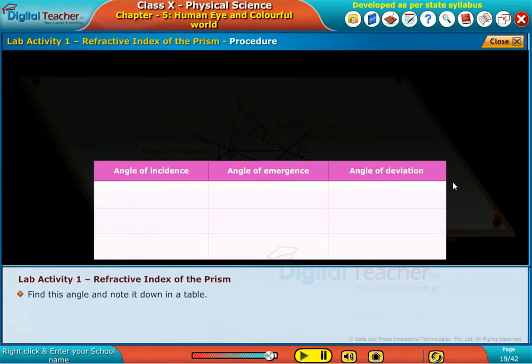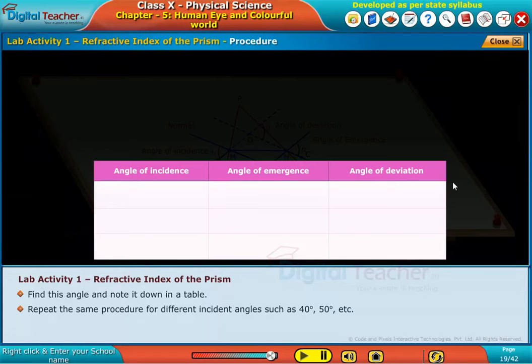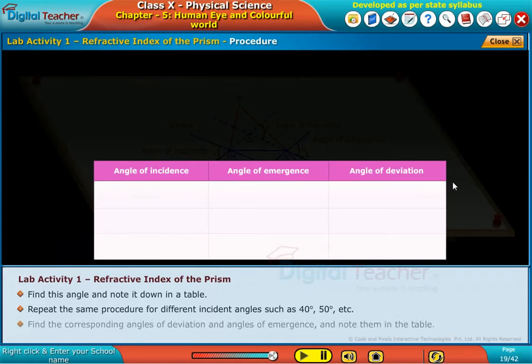Find this angle and note it down in a table. Repeat the same procedure for different incident angles, such as 40 degrees, 50 degrees, etc. Find the corresponding angles of deviation and angles of emergence and note them in the table.